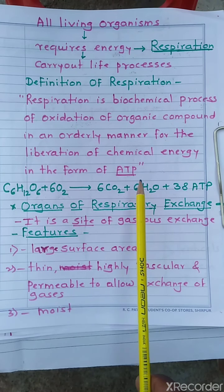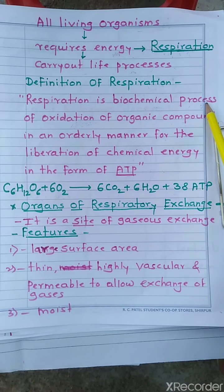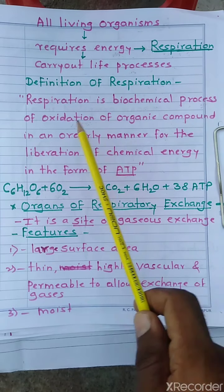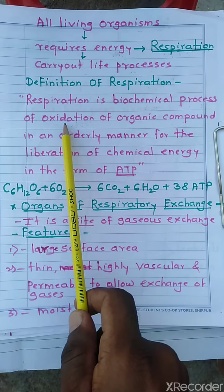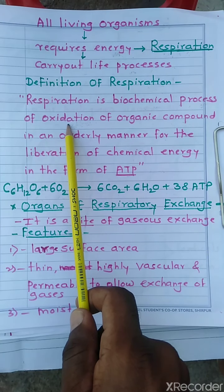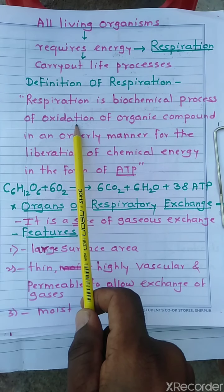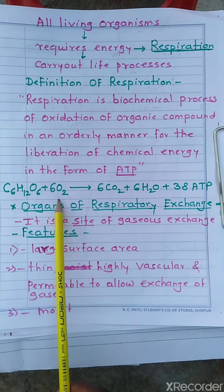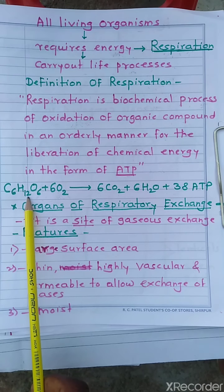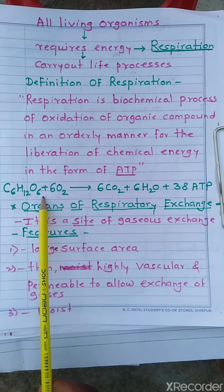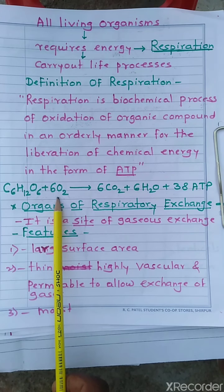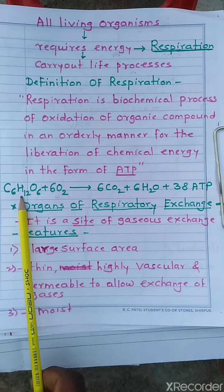Now, what do we mean by oxidation? Oxidation means the addition of oxygen. As you can see in the chemical reaction, oxygen is added to the glucose molecule. C₆H₁₂O₆ is nothing but the glucose molecule, also called an organic compound.